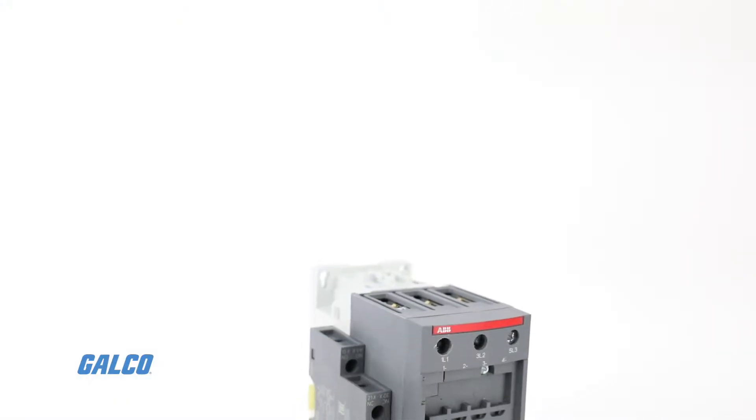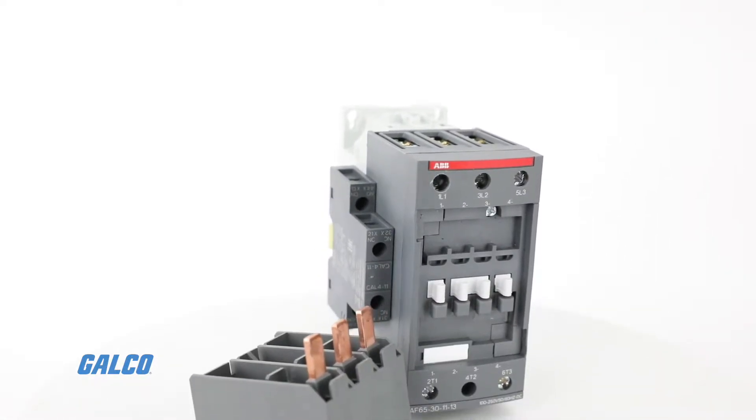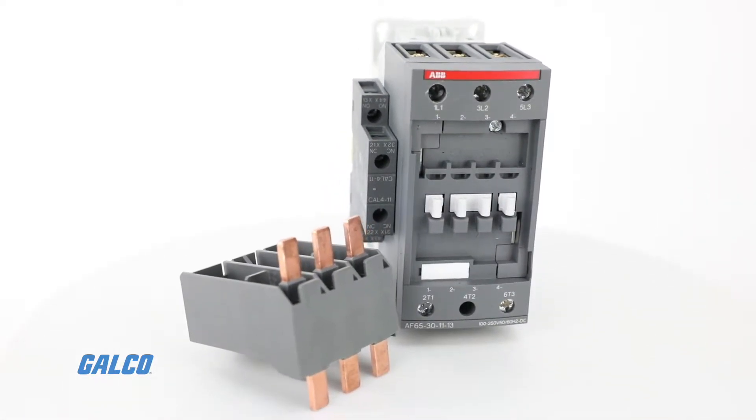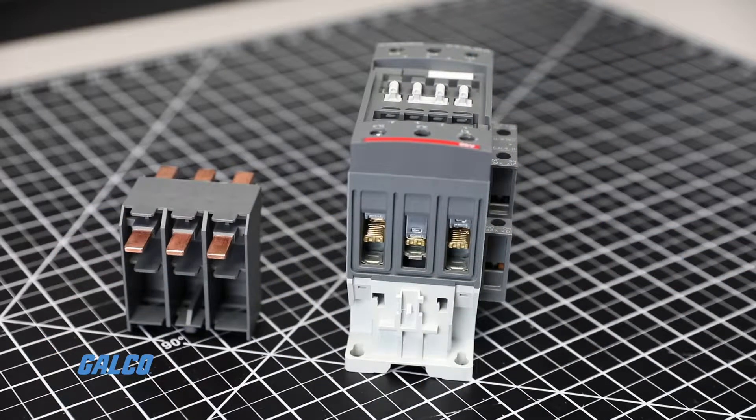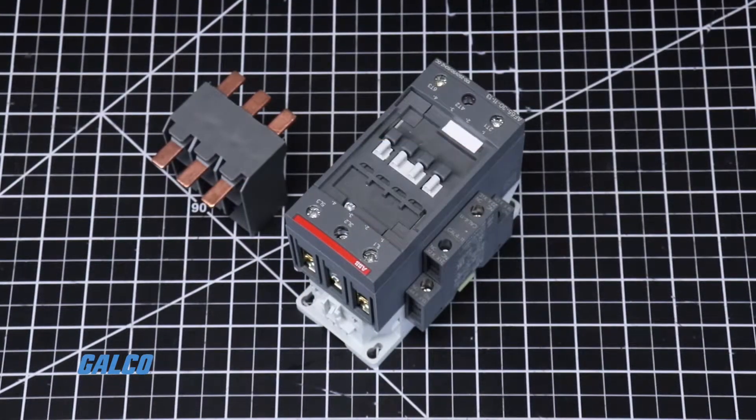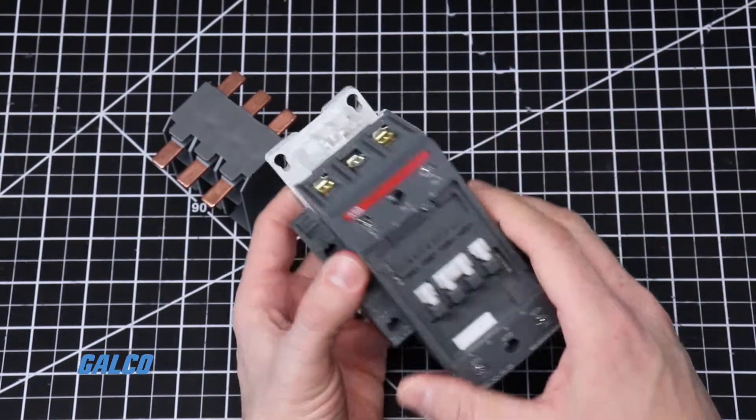Connecting a bus bar module to an ABB AF65 contactor is simple. The bus bar module is an easy way to bridge this contactor with other ABB components or line power.